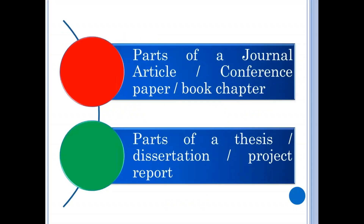What are the components of research output? A journal article, conference paper, or book chapter will basically comprise a title, author's affiliation, abstract, keywords, introduction, review of literature, methodology, data analysis, discussion, suggestions, conclusion, and bibliography. Thesis, dissertations, or project reports invariably have five components: introduction, review of literature, methodology, data analysis and interpretation, and findings, suggestions, and conclusion.